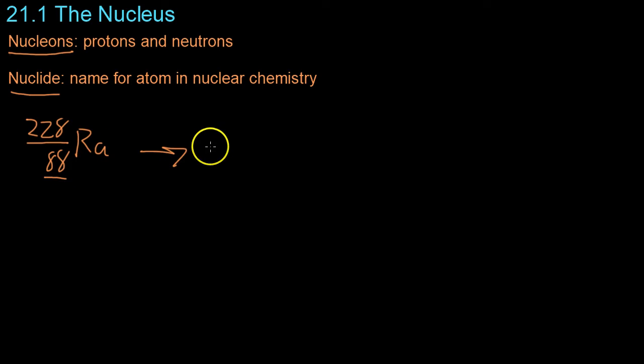This could similarly be written simply as radium-228 because you can go to a periodic table and look up the atomic number for radium number 88. And this means that there's 228 total nucleons, of which 88 are protons, because that's its atomic number.